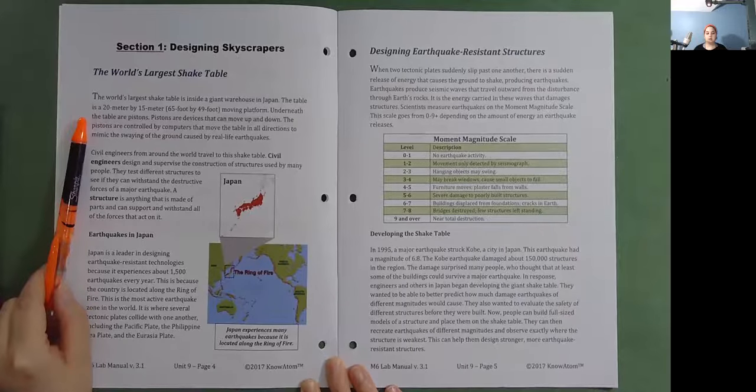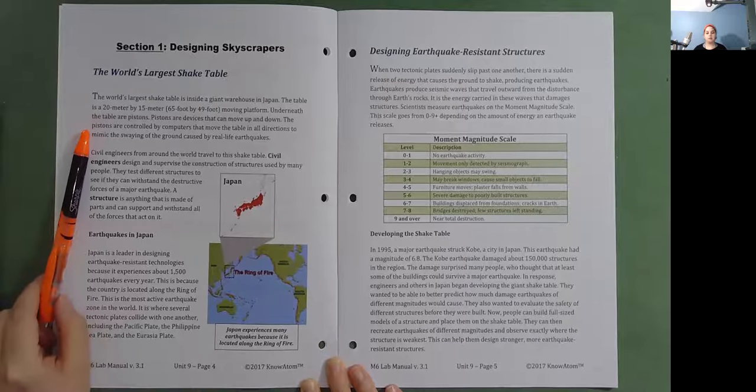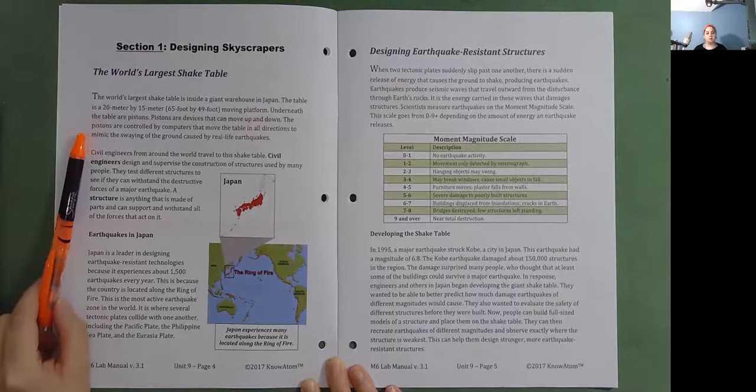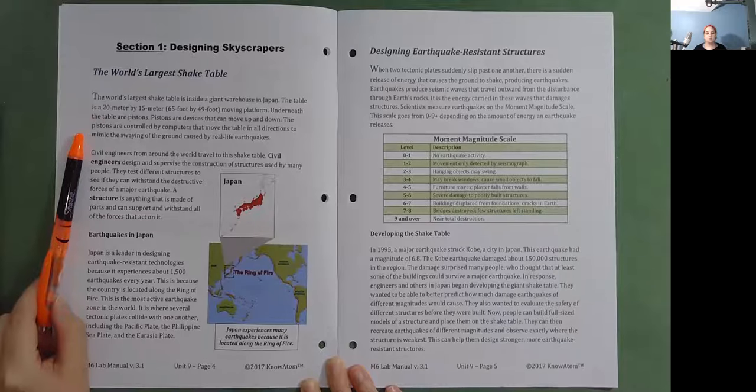Underneath the table are pistons. Pistons are devices that can move up and down. The pistons are controlled by computers that move the table in all directions to mimic the swaying of the ground caused by real life earthquakes.